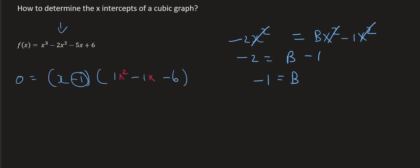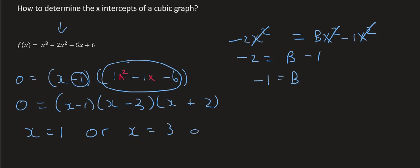So now to find the other two x-intercepts we could factorize this. If you can't factorize that then use the quadratic formula. Absolutely fine. But in this case it does factorize quite nicely. And so if you had to factorize that you would get x minus 3 and x plus 2. So our three answers are going to be x equals to 1 or x equals to 3 or x equals to minus 2.